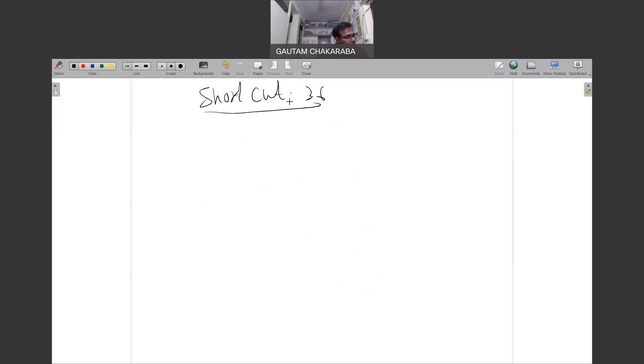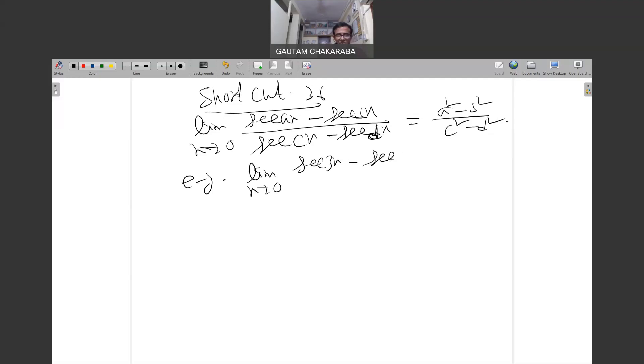Shortcut 36: x tends to 0, tan ax minus tan cx over tan cx minus tan dx equals a squared minus c squared by c squared minus d squared. Example: x tends to 0, tan 3x minus tan 5x over tan 7x minus tan 2x equals 9 minus 25 over 49 minus 4.